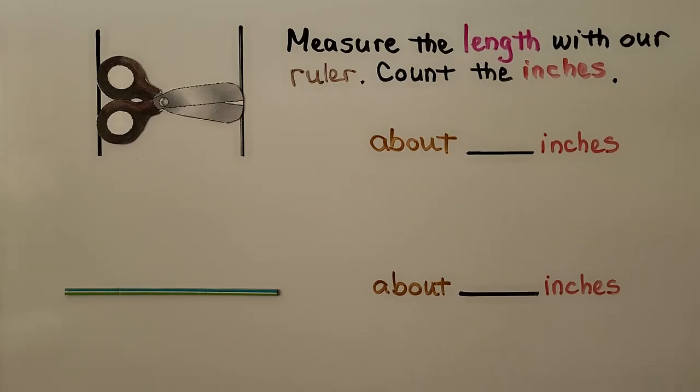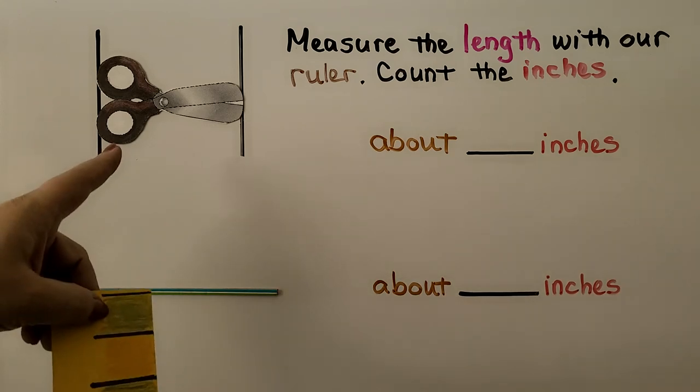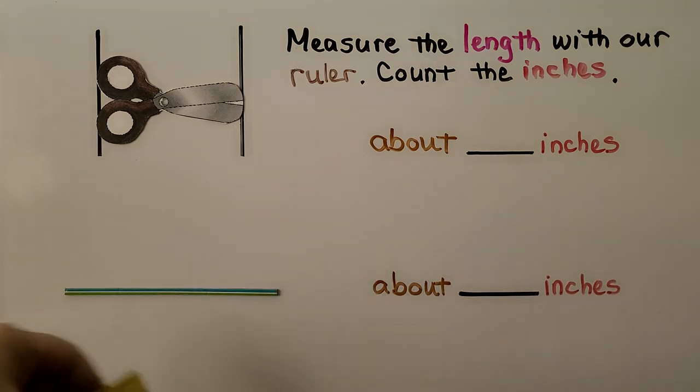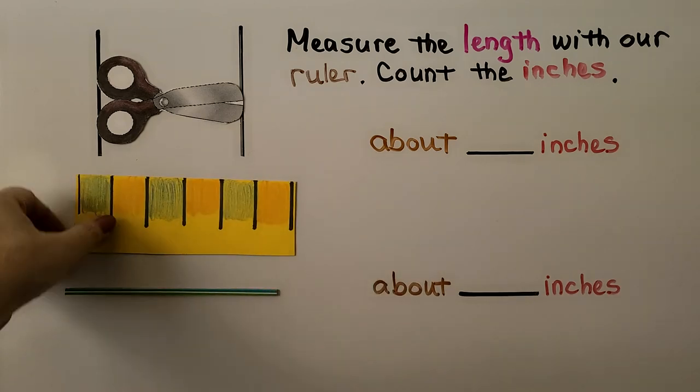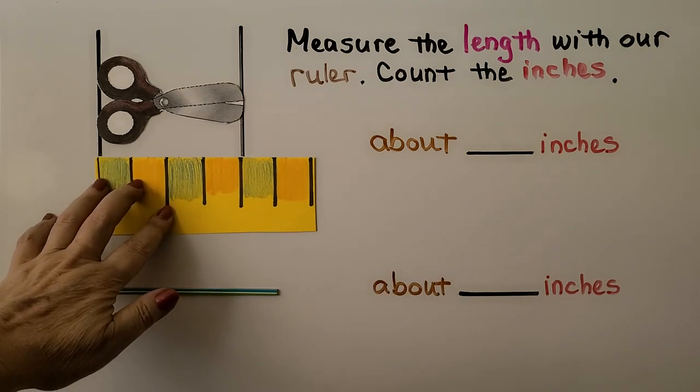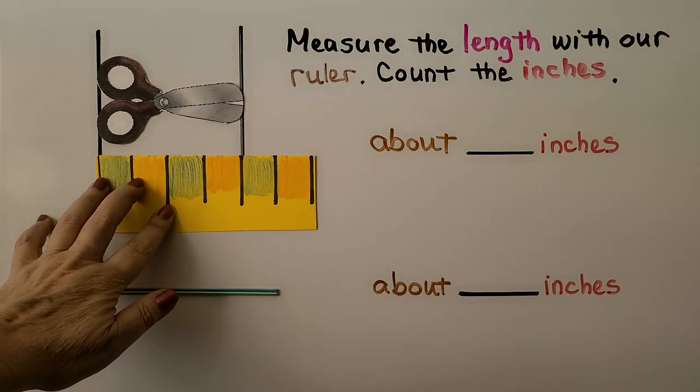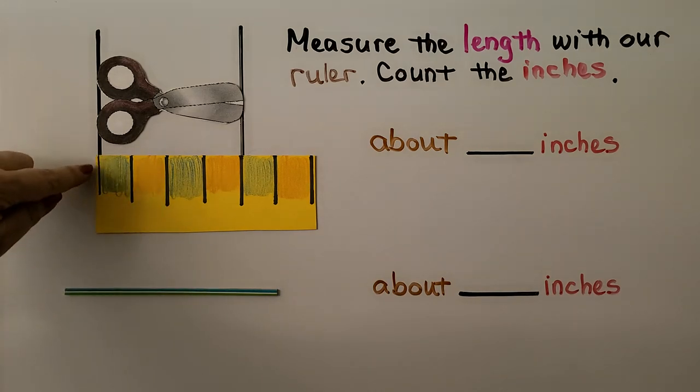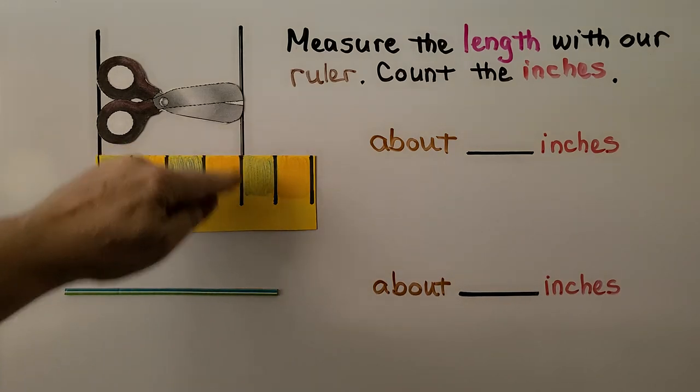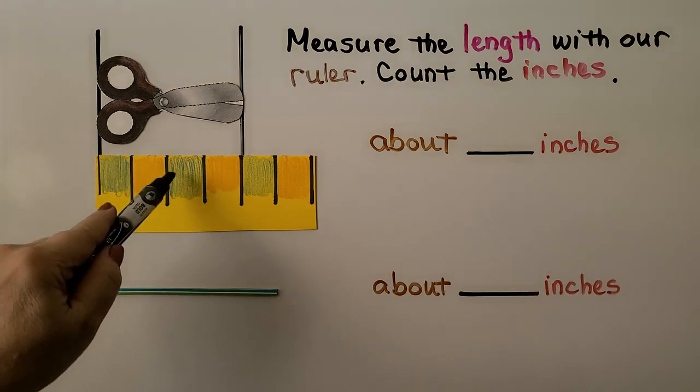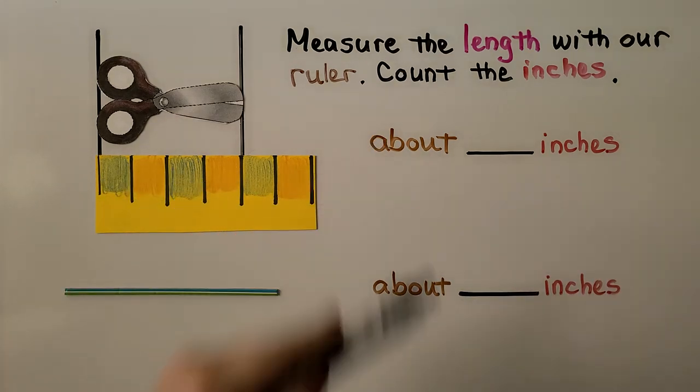Here it's telling us to measure the length with our ruler and count the inches. So we have a scissors and it starts here and it ends here. We can take the ruler we just made and line up the edge with that line right here. We line the lines up and where it ends, we line it up, and we can see that it's one, two, three, four parts. That means it's about four inches.